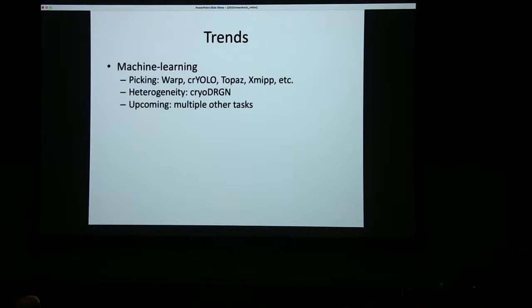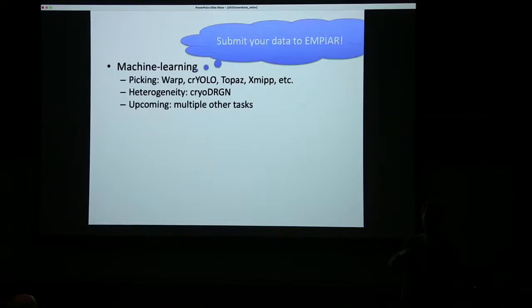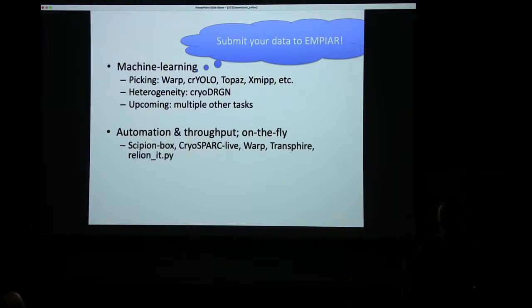Before I wrap up, just a few quick words on some trends in the field. Machine learning is picking up — deep convolutional neural networks, the whole thing that not only has an impact on AlphaFold structure prediction but also in our field: picking, heterogeneity, CryoDRGN, etc. In this light, it's really useful if you could all submit your datasets to the EMPIAR data bank — not only your PDB models and EMDB reconstructions but the raw movies as well, so that people can download them and train big neural networks and make your life even easier in the future. Automation, throughput, on-the-fly processing — lots of different solutions. And there's a shift in excitement moving from single particle analysis to tomography and subtomogram averaging, where a lot of progress is being made.